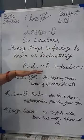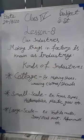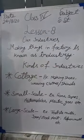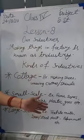Next is kinds of industries. There are total 3 kinds of industries.